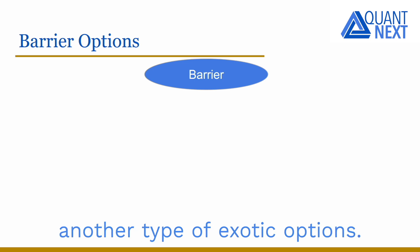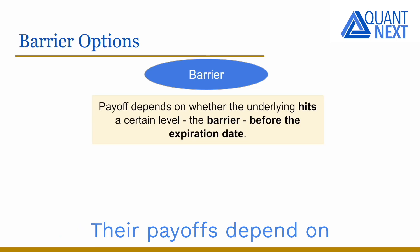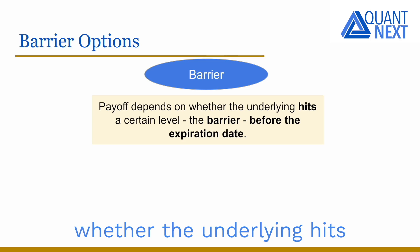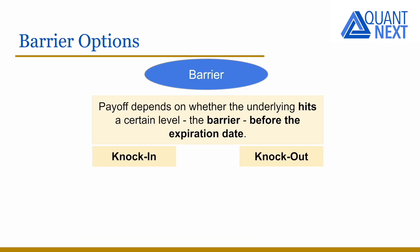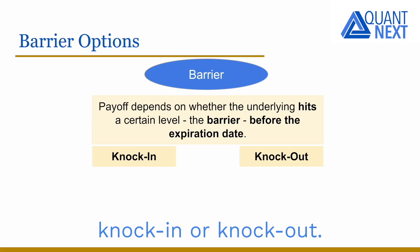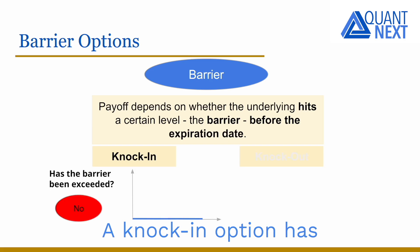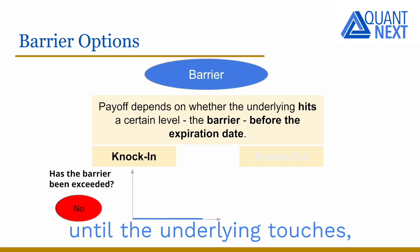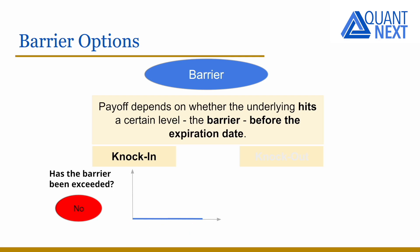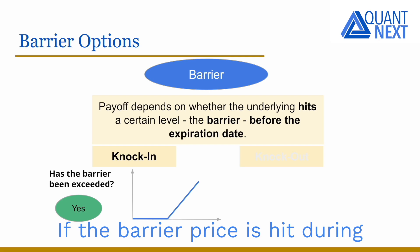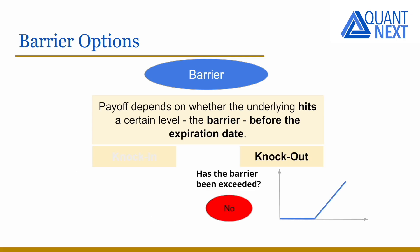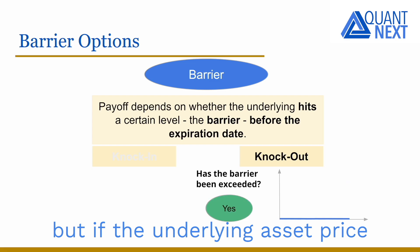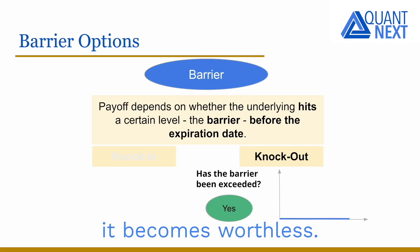Barrier options are another type of exotic options. Their payoffs depend on whether the underlying hits a certain level — the barrier — before the expiration date. They can be either knock-in or knock-out. A knock-in option has no intrinsic value until the underlying touches the barrier price; if the barrier price is hit during the life of the option, it becomes a vanilla option. A knock-out option is like a vanilla option, but if the underlying asset price hits the barrier level, it becomes worthless.